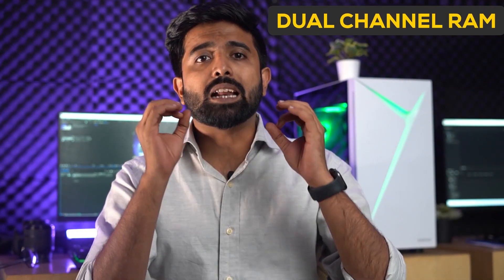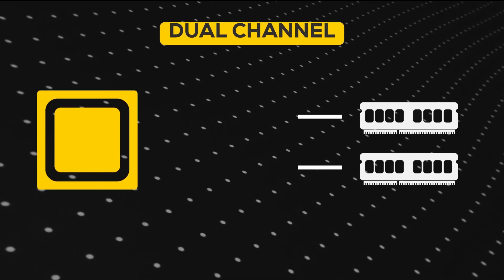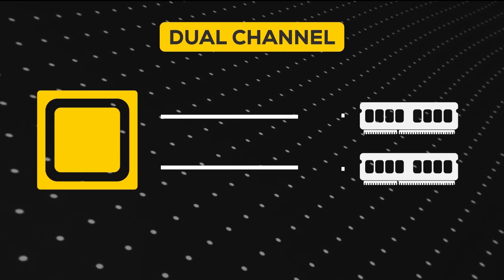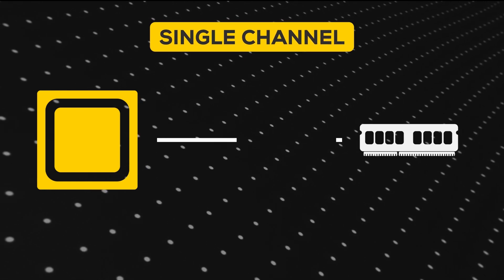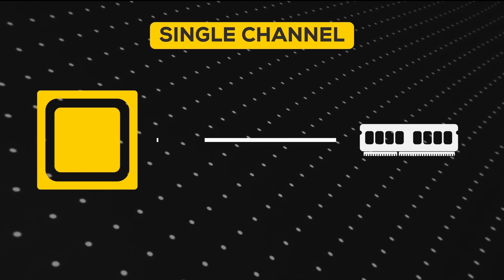Talking about hardware, try to go for dual or quad channel RAM, because your preview speed directly corresponds to how fast you can access your RAM. Dual channel literally means your CPU can access two times more RAM than a single channel setup.